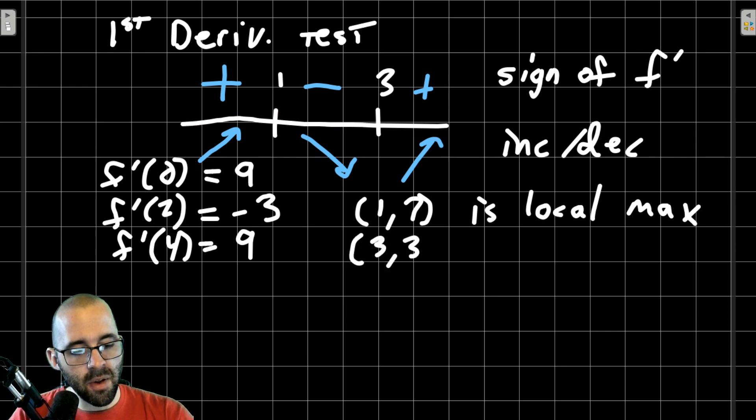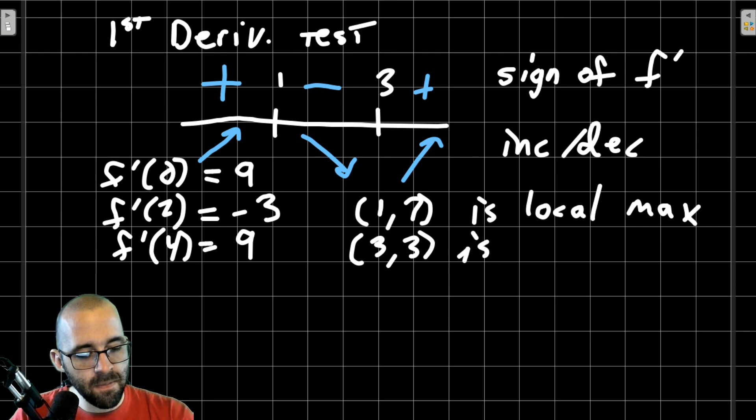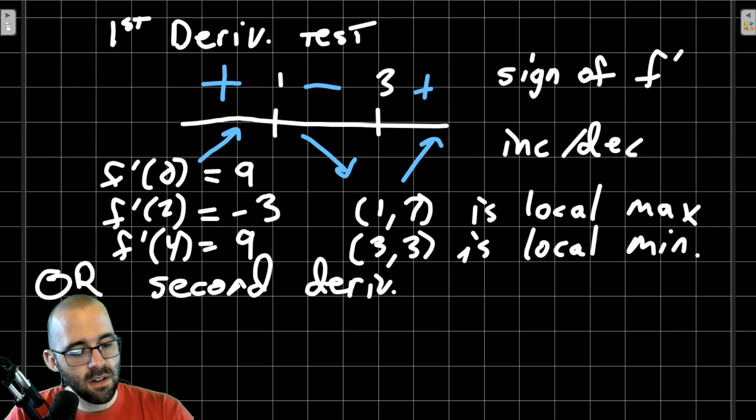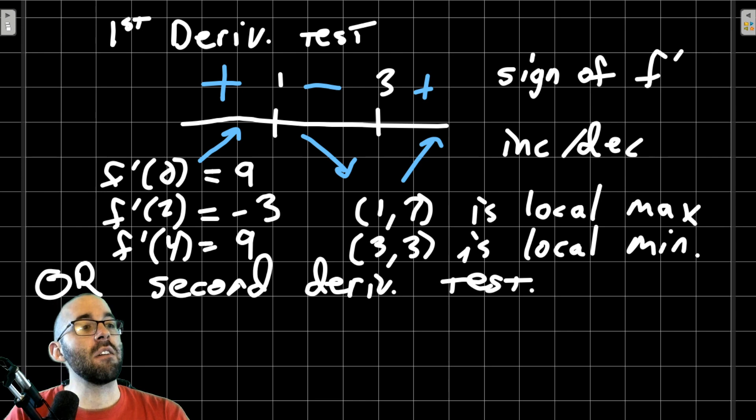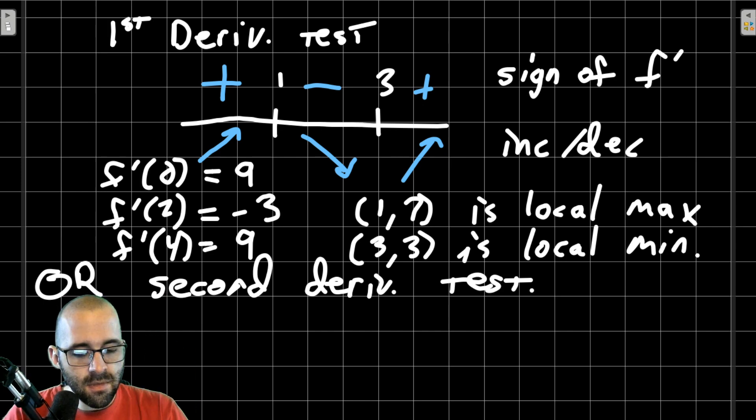Similarly, (3,3), it's going down and then going up. That's a local min. Let's say hypothetically that you don't like the first derivative test, or if you have extra time and you want to check your answer, you could also use a second derivative test. October, my youngest cat, is really flipping out right now. She is probably going to start climbing the ceiling.